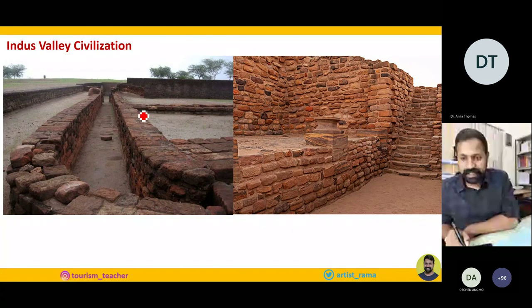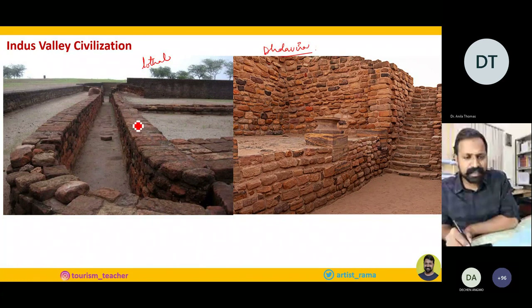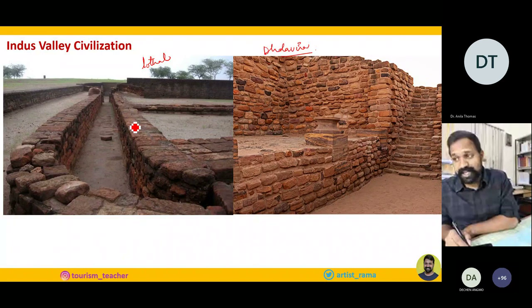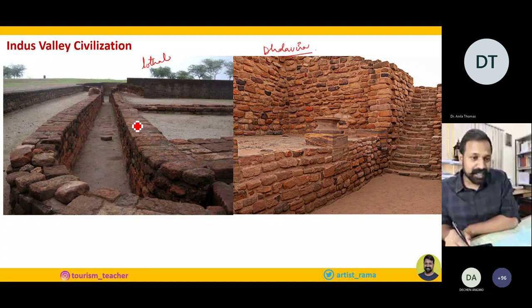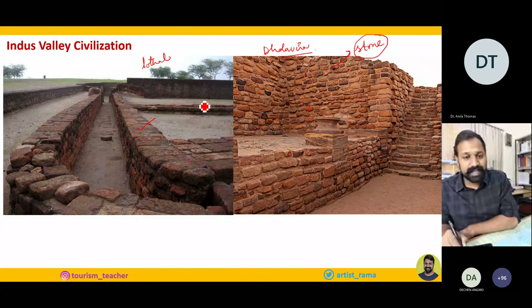These are two Indus Valley sites from Gujarat — the first one is Lothal and the second is Dholavira. During history or art and architecture classes, you must have come across the explanation that Indus Valley Civilization people used bricks — especially sun-dried and baked bricks — enormously to construct their cities, homes, ports, palaces, etc. But I would like to bring to your notice that along with brick, they also predominantly used stone in construction. This is one element that is always kept away from history books for many untold reasons.